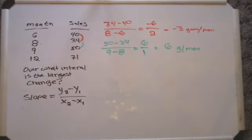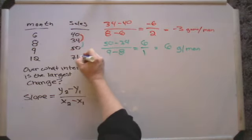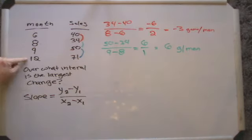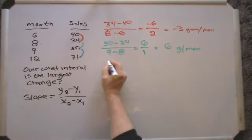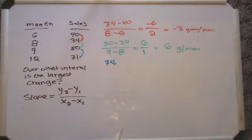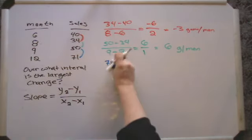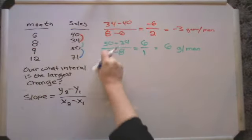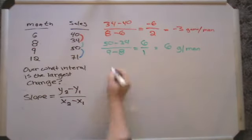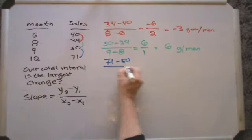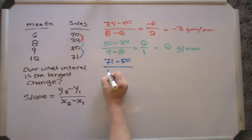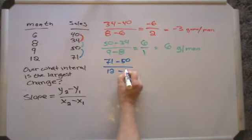And now last but not least, I've got this interval. We don't take another recording until we get into December. We skipped for some reason October, November. We have a number on December here, so let's see. 71 games sold that month. Oops, it's not 74, 71. Okay, 71 minus 50. Now we do the two x's. 12 minus 9.